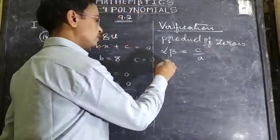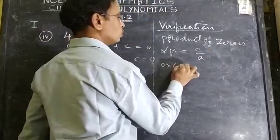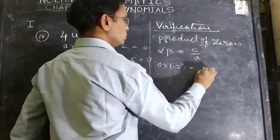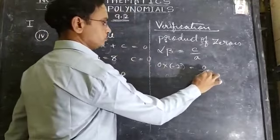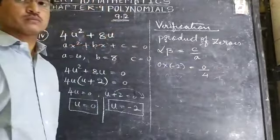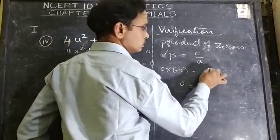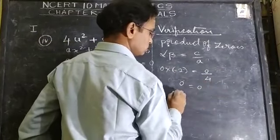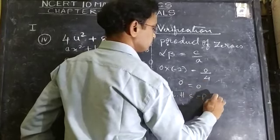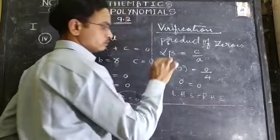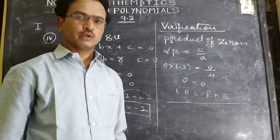What is alpha value? 0. Beta value, -2. So 0 × (-2) equals c value 0 divided by A value 4. 0 × (-2) = 0, and 0 divided by any number is 0. LHS equals RHS. Verified. Thank you.